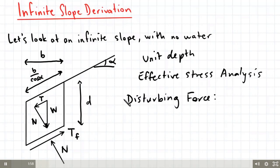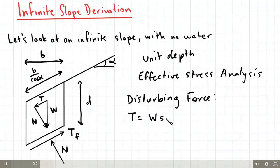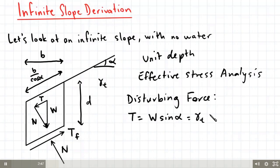The disturbing force is the force which causes the soil element to tend to slide down the slope surface — that would be T. T, the tangential force component of W, is represented by T equals W sin alpha. W, the force due to the weight of soil, is found by multiplying gamma T by the dimensions b and d. So rewriting this, T equals gamma T multiplied by d sin alpha.